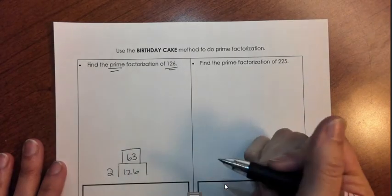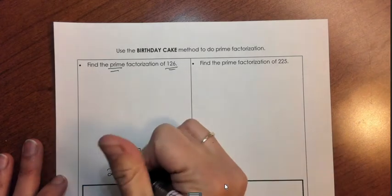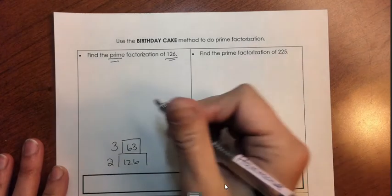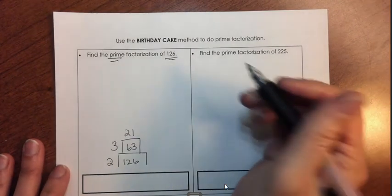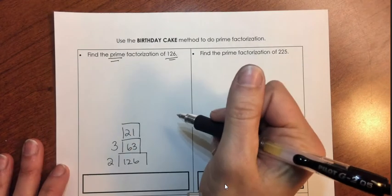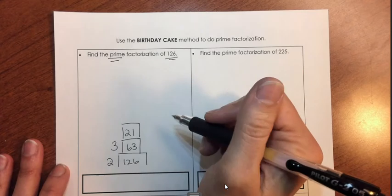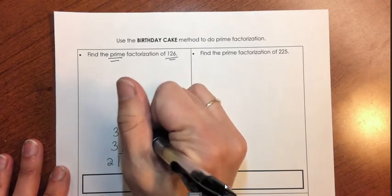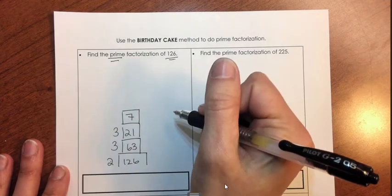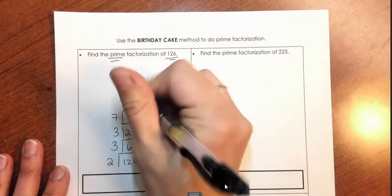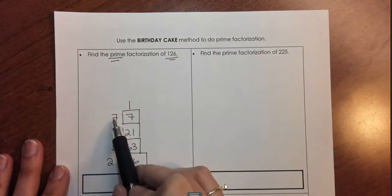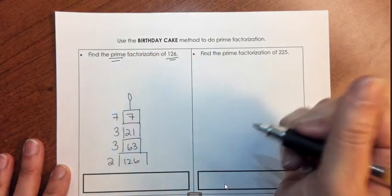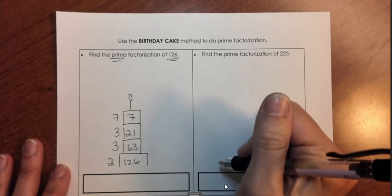Then I need to think of another prime number that can go into 63. 3 is a prime number and 3 goes into 63 twenty-one times. 21 is the next layer of my birthday cake. 3 is a prime number that goes into 21. 7 is a prime number that goes into 7, and 7 goes into 7 one time. When I end with 1, that is the candle — that is the birthday cake complete.